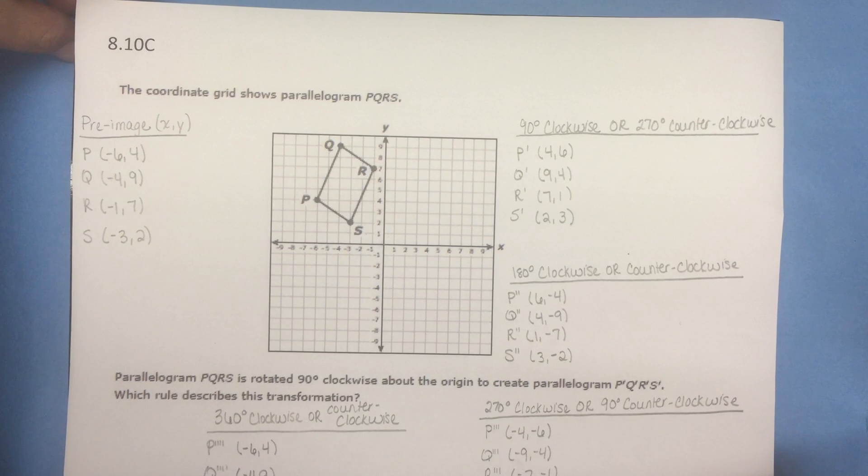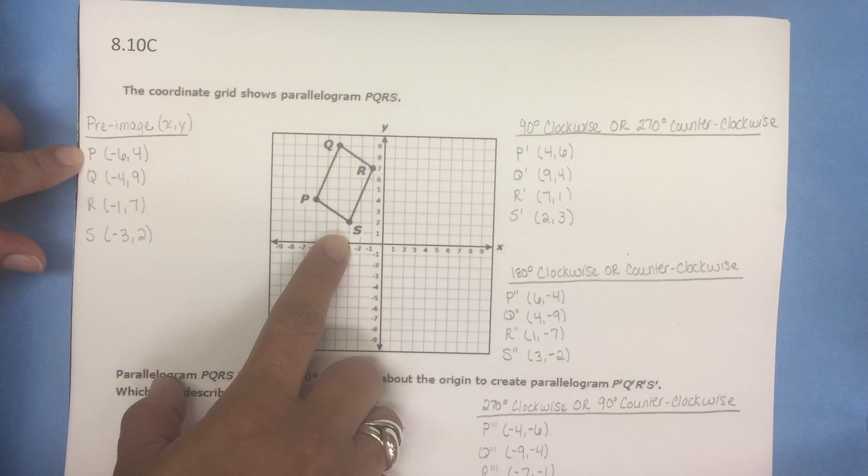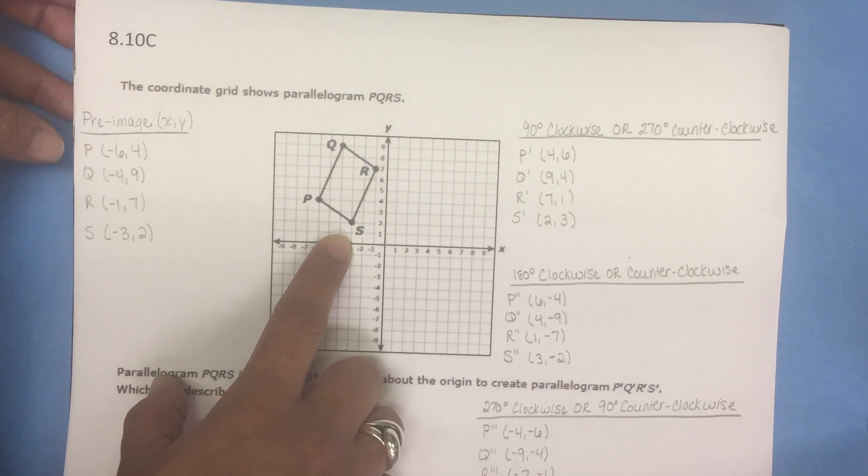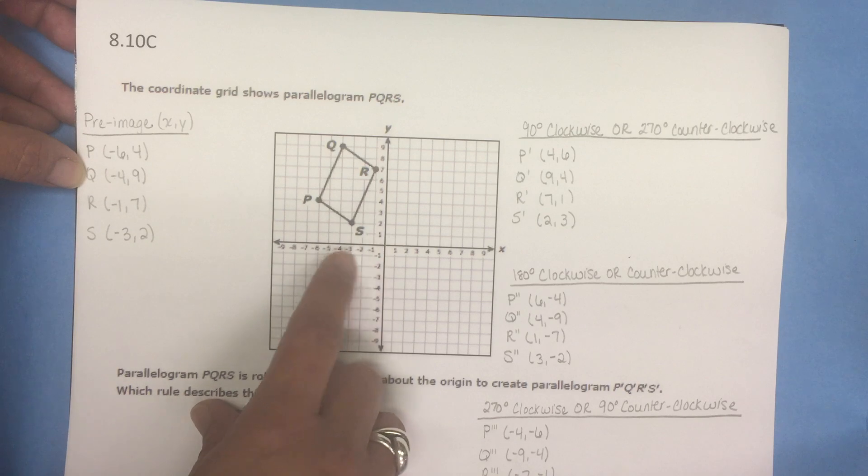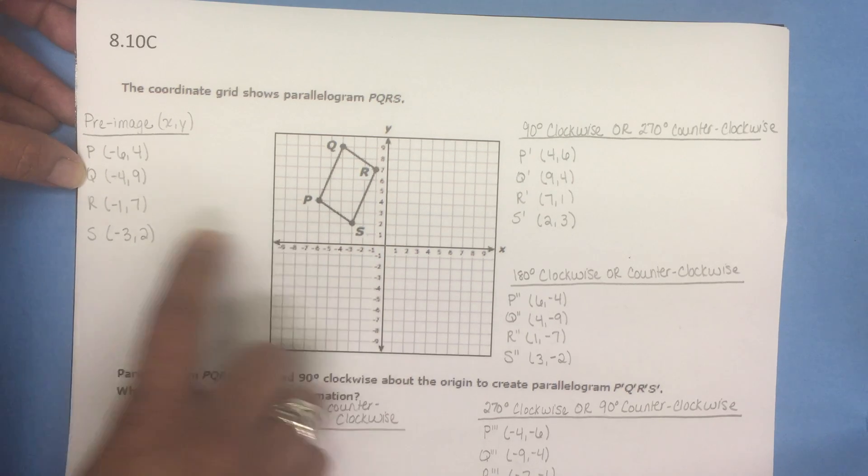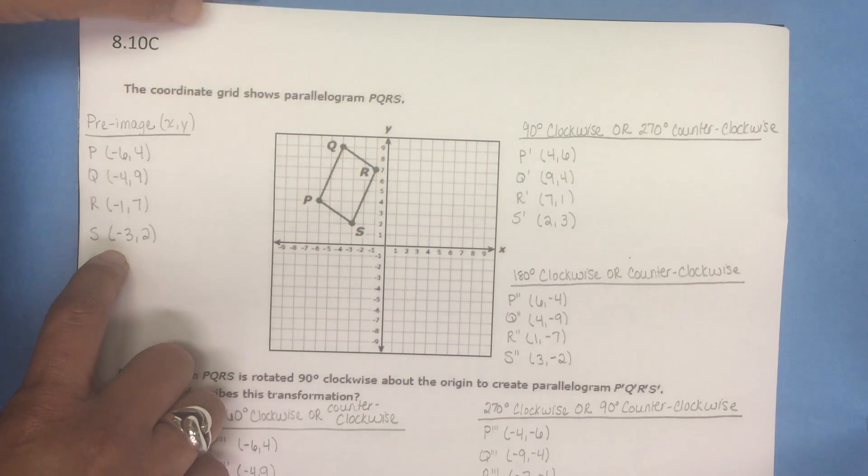First, let's look at our original image which is provided here. Let's list the coordinates of this image. So P has the coordinates of (-6, 4), Q has the coordinates of (-4, 9), R of (-1, 7), and S (-3, 2).